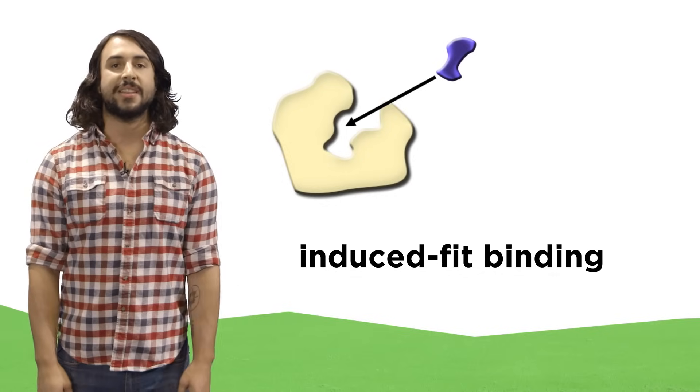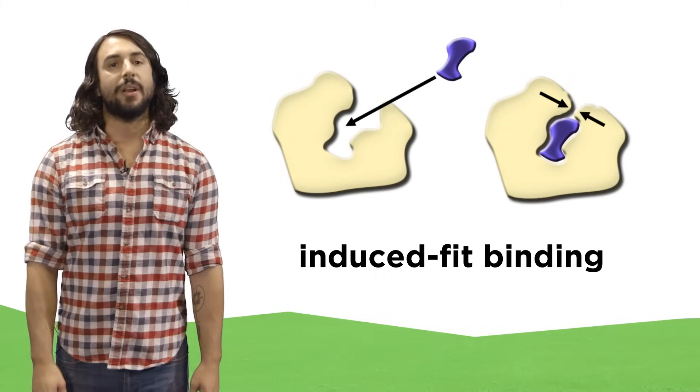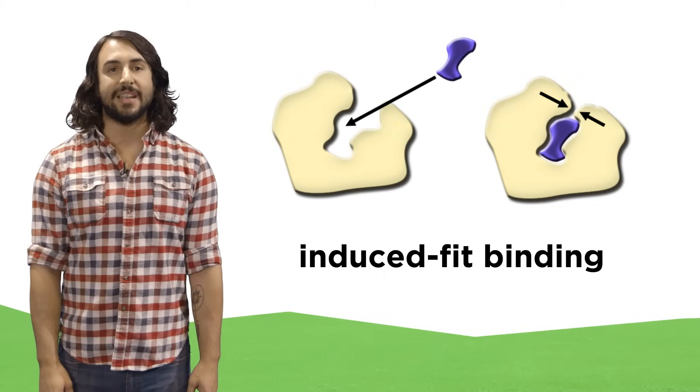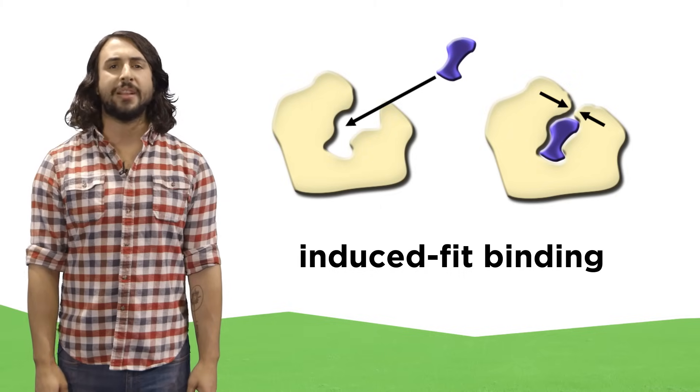The substrate might fit into the active site as is, or it might cause an induced fit, where the enzyme changes shape slightly once the substrate is inside. But either way, once the substrate is inside the active site and binding has occurred, a number of things might happen.